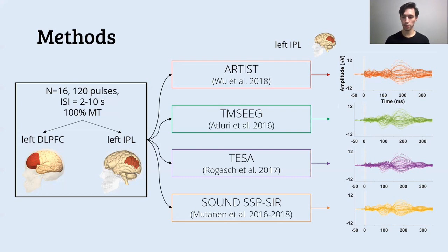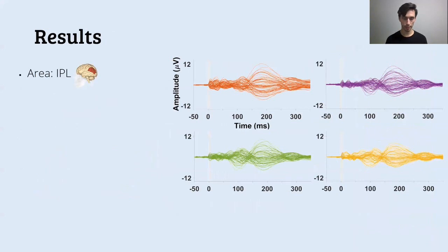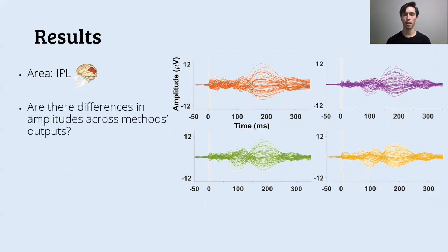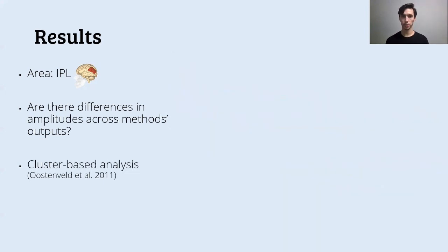Then to test our hypothesis, we just compared these four TEPs to look at differences and how the signal correlated with each other. So the results. I'm going to show you the results just for the inferior parietal lobule for time reasons, but also because the results in the dorsolateral prefrontal cortex are very similar. So here are the four outputs. And the first thing we wanted to check were differences in the amplitude of the signal. So we looked at point-by-point, channel-by-channel differences using the cluster-based analysis in FieldTrip. And here are the results.